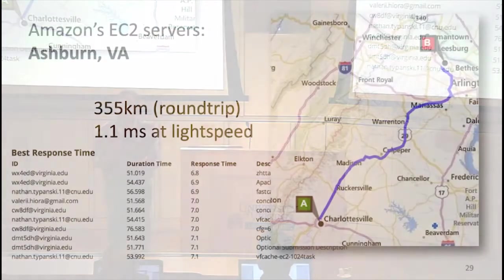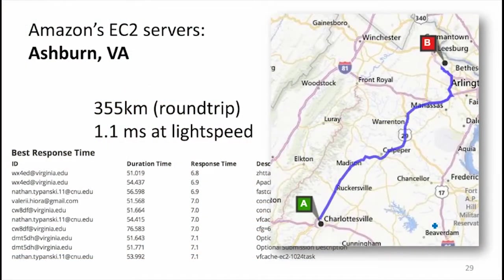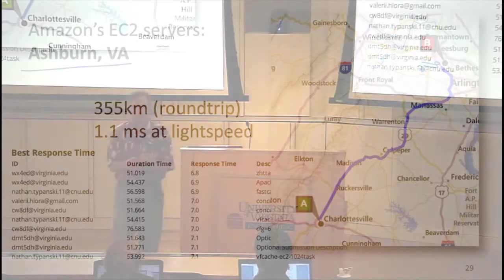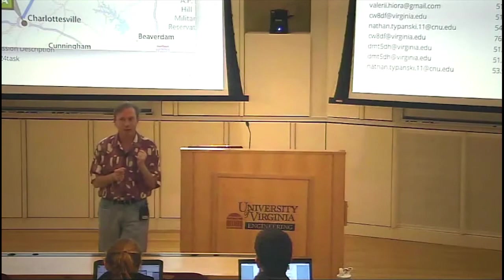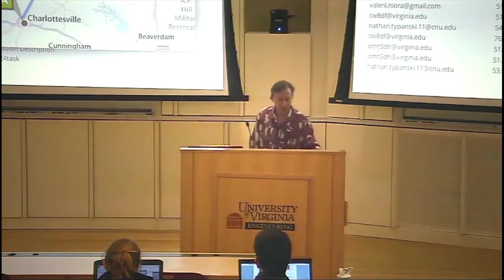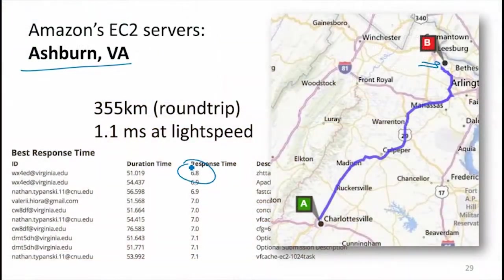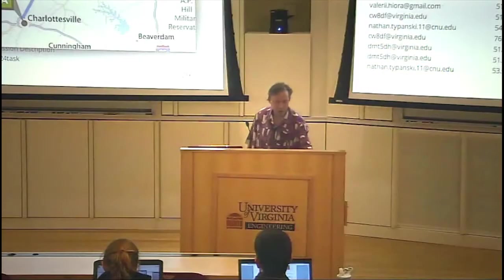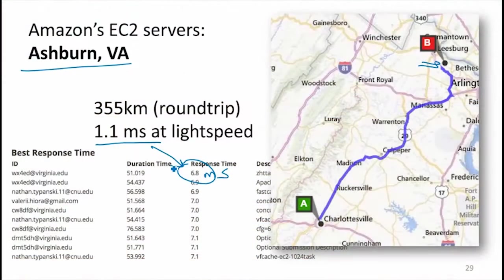What about your results for Problem Set 3? The EC2 servers that you're running on for the benchmark are in Ashburn, about 110, 120 miles from Charlottesville. So we've got to do a round trip of about 350 kilometers between Charlottesville and the server, and the best response times were 6.8 milliseconds. The time it takes to do that round trip at the speed of light is a little over a millisecond.